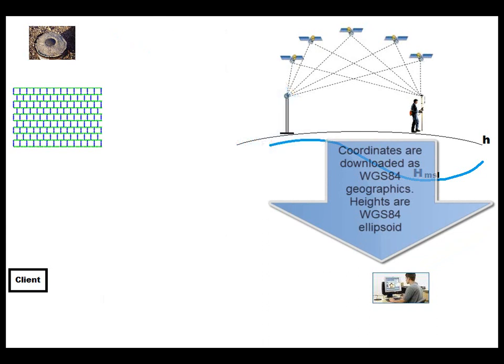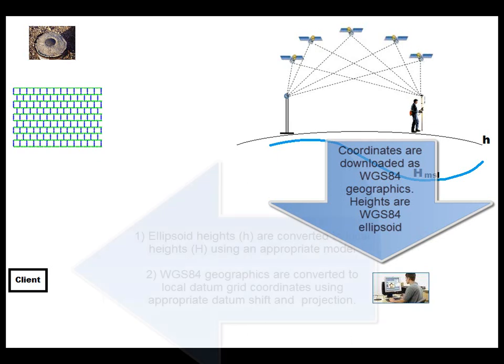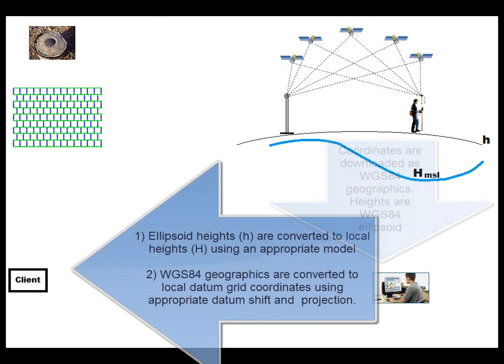This means coordinates are downloaded as WGS84 geographics and heights are WGS84 ellipsoid heights. In processing, ellipsoid heights are converted to local heights using an appropriate model. WGS84 geographics are converted to local datum grid coordinates using an appropriate datum shift and projection.